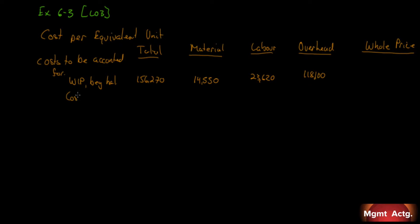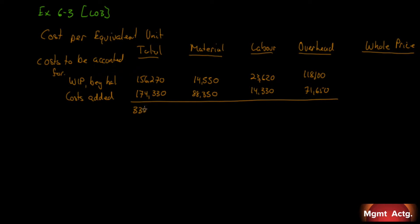Then we have costs added during the period — basically applied to the units added during the period. During May, we have $71,650 in overhead costs added, $14,330 in labor costs added, and $88,350 in material costs. Adding across, we get $174,330. Adding the two rows together: materials total is $102,900, labor total is $37,950, and overhead total is $189,750. Total cost is $330,600.